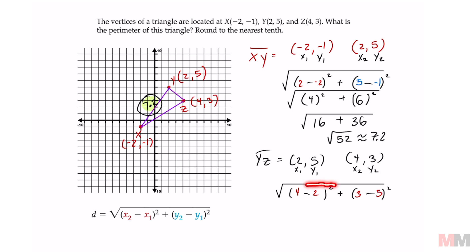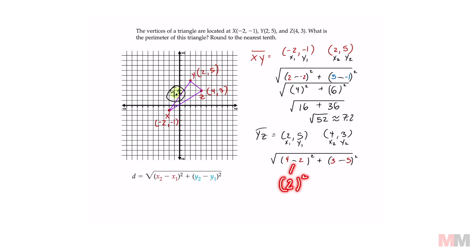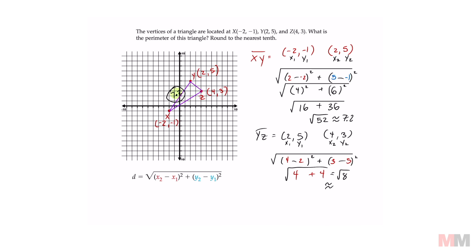You can type all of this in the calculator or do it in your head: 4 minus 2 is 2, and 2 squared equals 4. Then 3 minus 5 is negative 2, and negative 2 squared — remember, anything squared is a positive result — equals 4. So we need the square root of 4 plus 4, which is the square root of 8, and that rounds to 2.8.